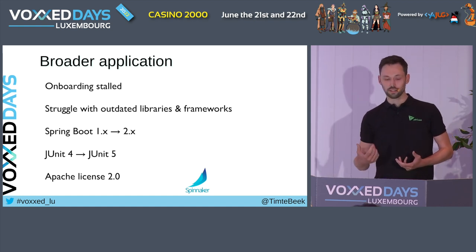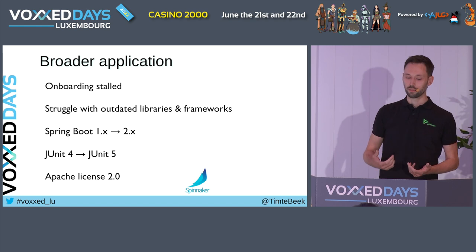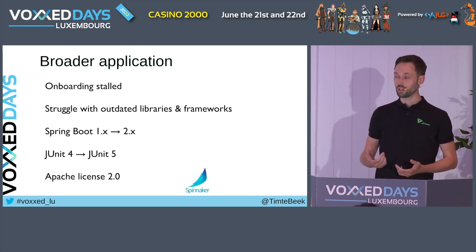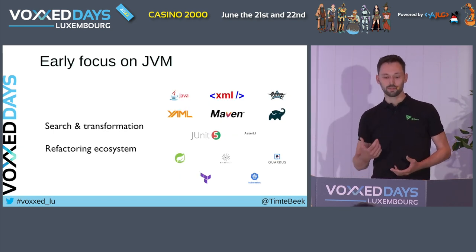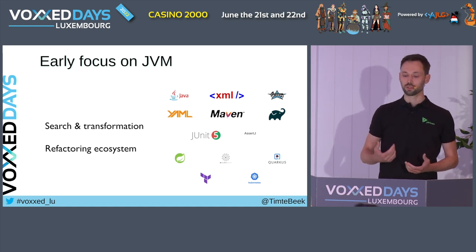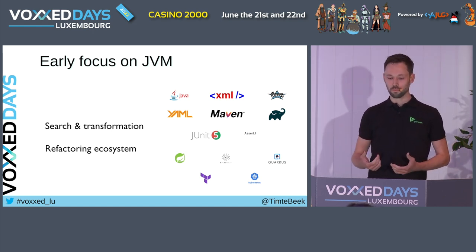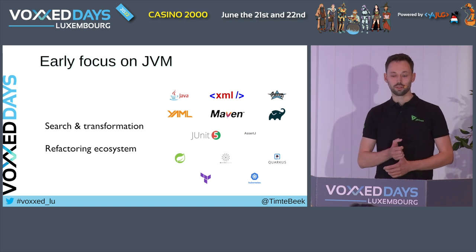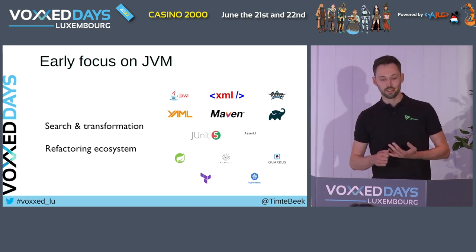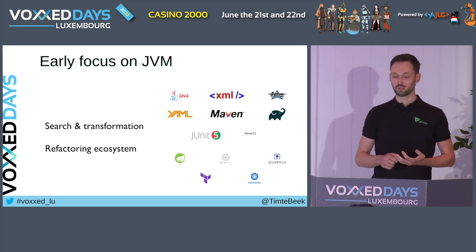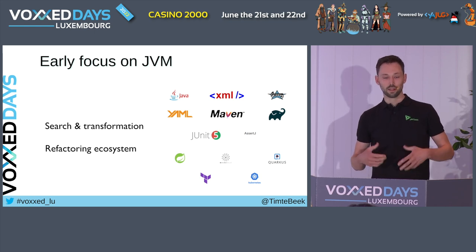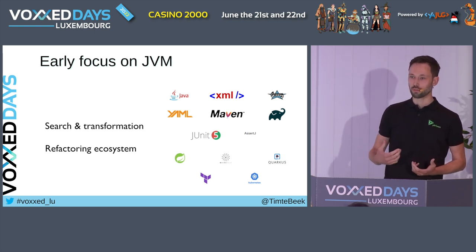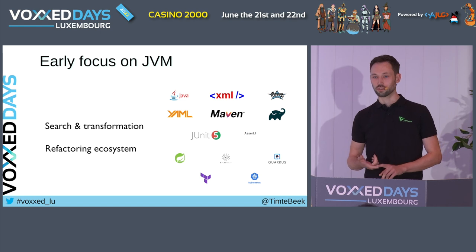The project has since been open sourced, and the company behind it is committed to making all recipes available under the Apache license. The initial focus for Open Rewrite is on JVM languages and surrounding technologies. There are parsers for Java, Groovy, and XML. These in turn unlock support for build tools such as Maven and Gradle, and libraries such as JUnit, AssertJ, and Guava. Ultimately, refactoring entire frameworks and platforms is supported, with recipes available for Micronaut, Quarkus, and Spring.